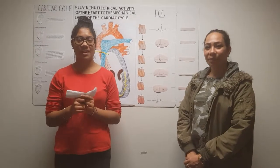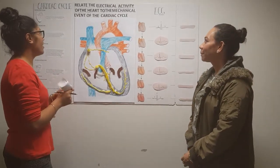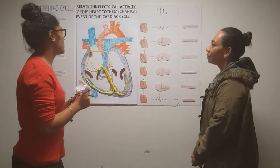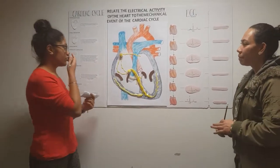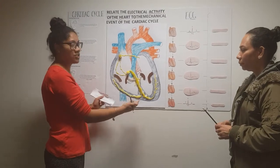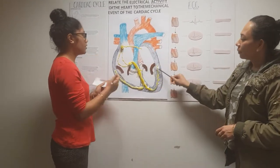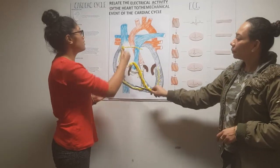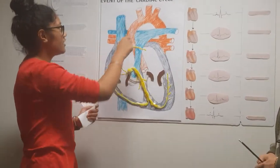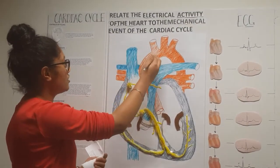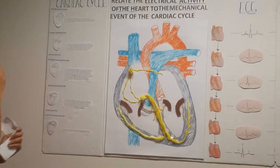Hi, this is Group Stay Healthy and we're going to be relating the electrical activity of the heart to the mechanical event of the cardiac cycle. This yellow structure here is the conduction system which is responsible for the electrical activity of the heart, and the electrical activity initiates the mechanical events of the cardiac cycle.